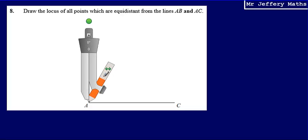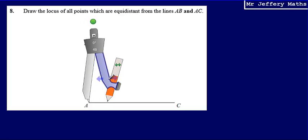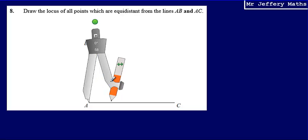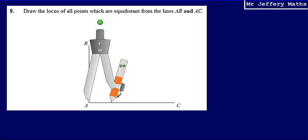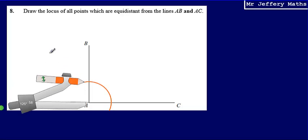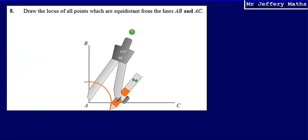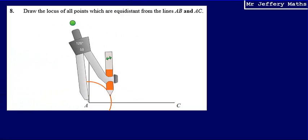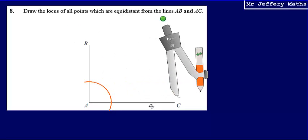Then I'm going to just open out the compass and I'm going to draw an arc that cuts through the lines AB and AC. So it cuts through the line AC and the line AB.